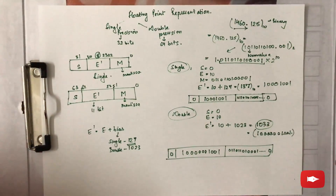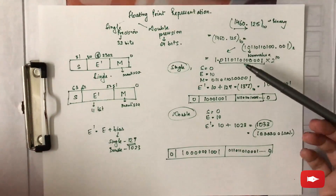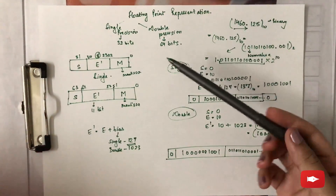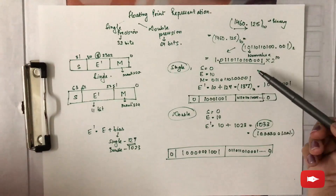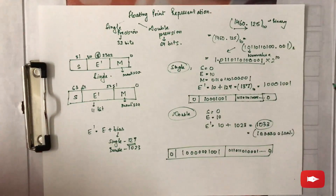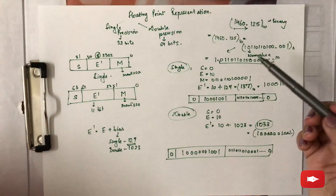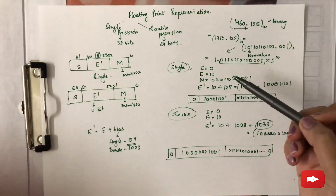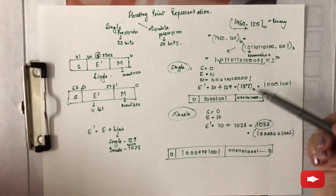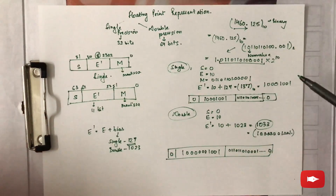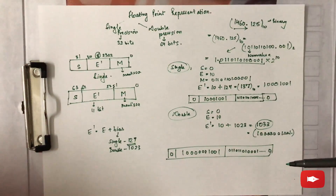To sum up: you need to check whether the number is negative or positive to get S. The mantissa is the same for both single and double precision. You just need to find the modified exponent e-dash by adding 127 for single precision and 1023 for double precision. Remember to convert everything into binary format and then solve the question.